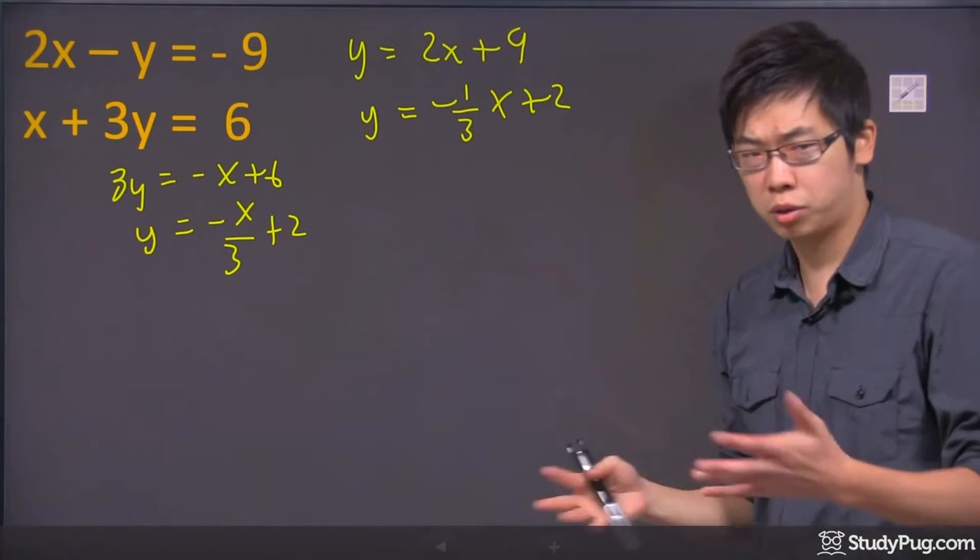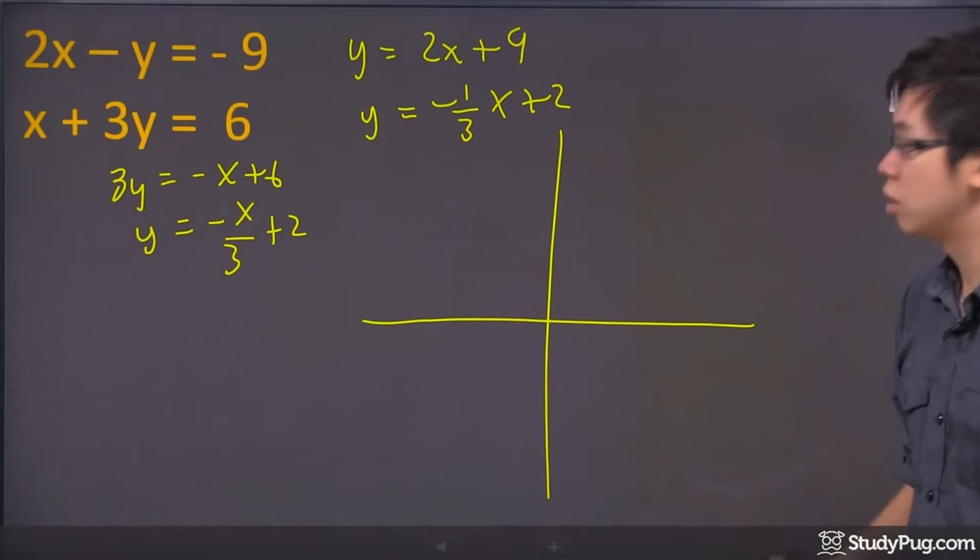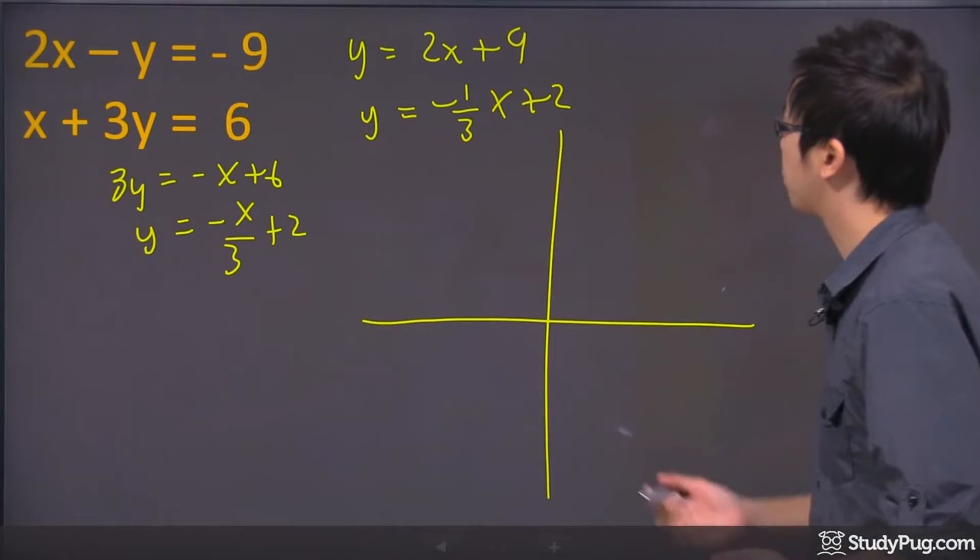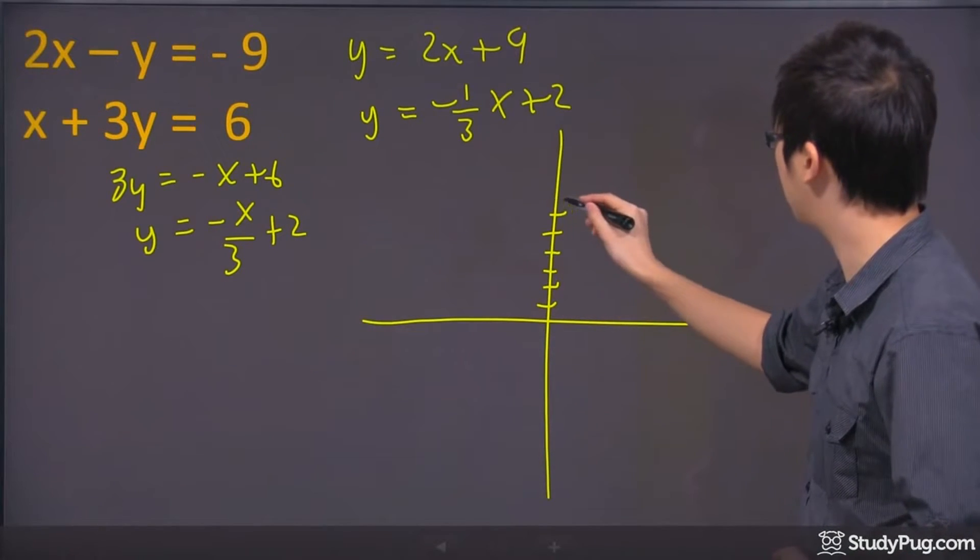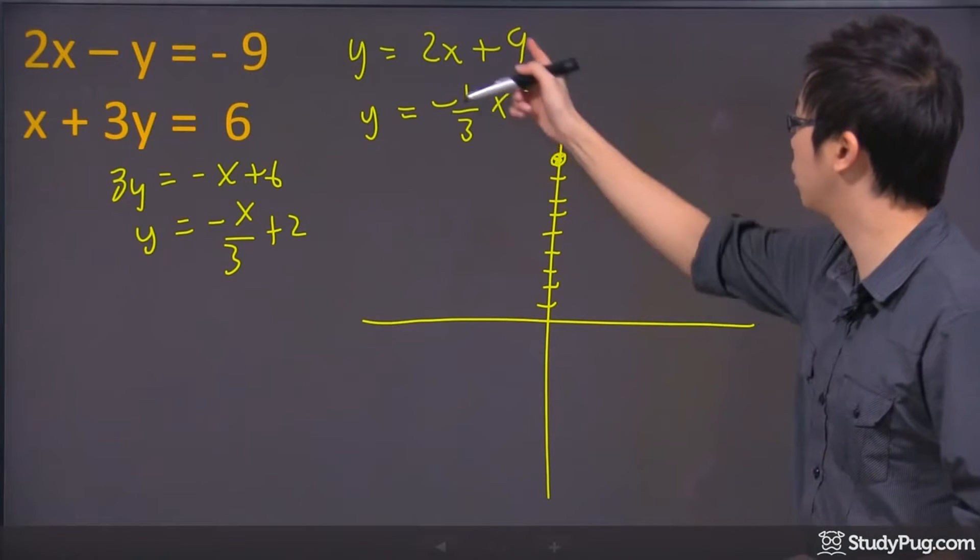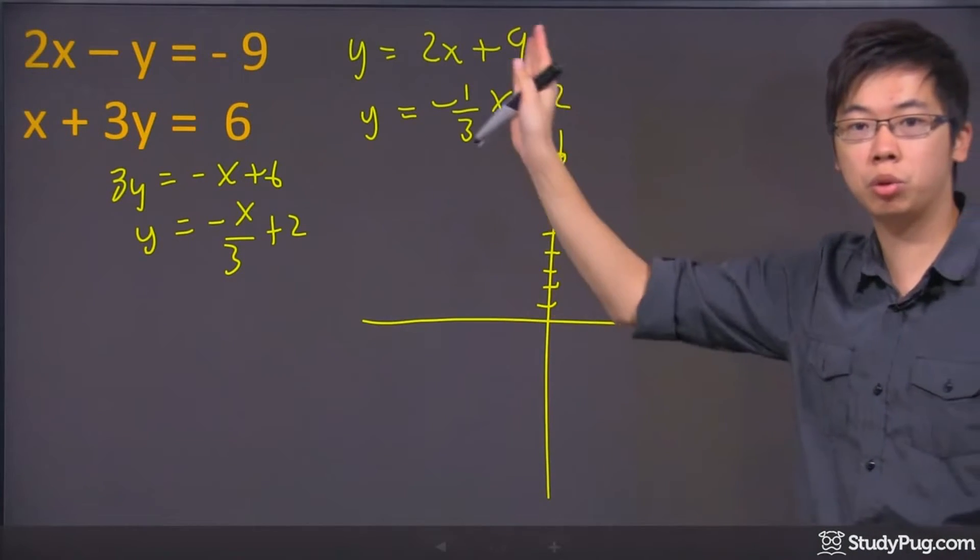Now if you have graph paper or just a piece of paper, that's fine because we're just going to do a rough sketch. I've got positive 9 on top: 1, 2, 3, 4, 5, 6, 7, 8, 9. There's a point right there for the first equation, going up 2 over 1.